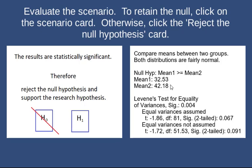Because we don't know that the variability for the two groups is similar, we need to look at Levene's test for equality of variance. If the significance is 0.05 or less, we will reject the idea of equality of variances. In this case, the significance is 0.004, so instead of assuming equal variances, we have to go with equal variances not assumed.